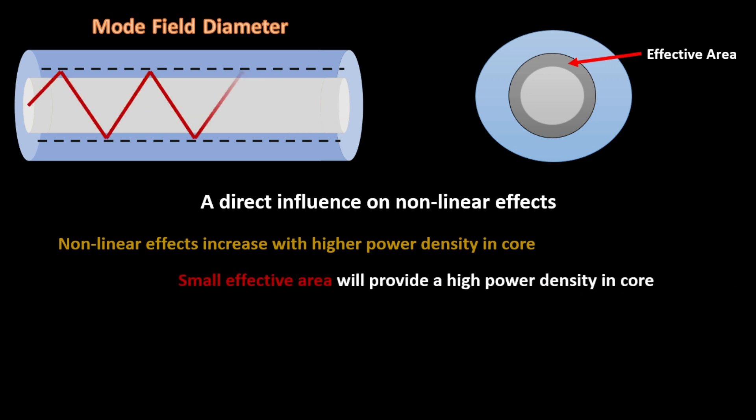A small effective area will provide high power density. Subsequently, for a larger effective area, the power is better distributed.